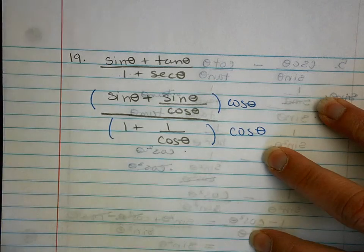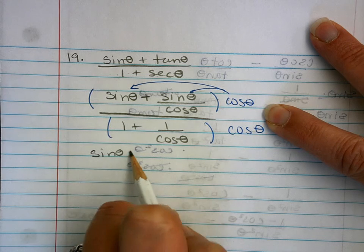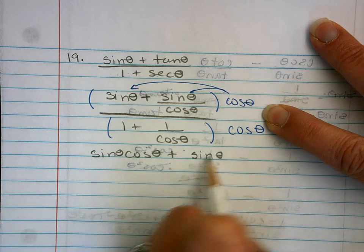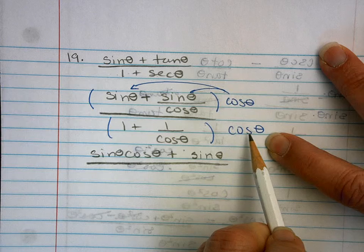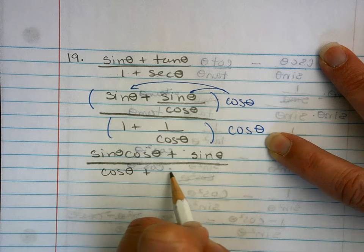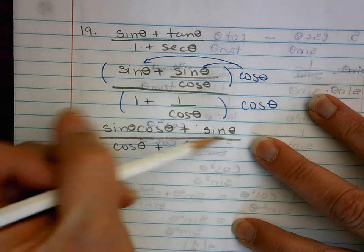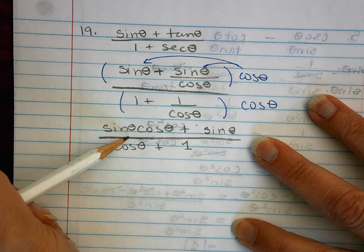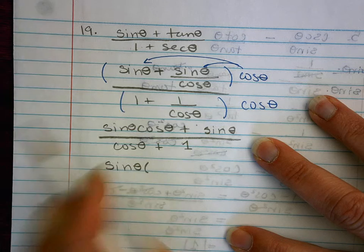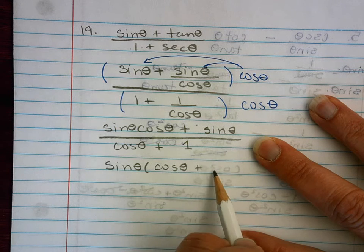I'm going to distribute that in. When I multiply by sine it won't cancel, so I'll just have sine times cosine. But when I distribute here it will cancel, leaving just a sine. In the denominator I'll distribute: cosine times 1, and when I multiply here, cosine over cosine is just 1. Now I see that this term and this term both have sine theta in them, so I'm going to factor a sine theta out of the top. When I divide sine theta out, I'm left with cosine theta here and just 1 there.